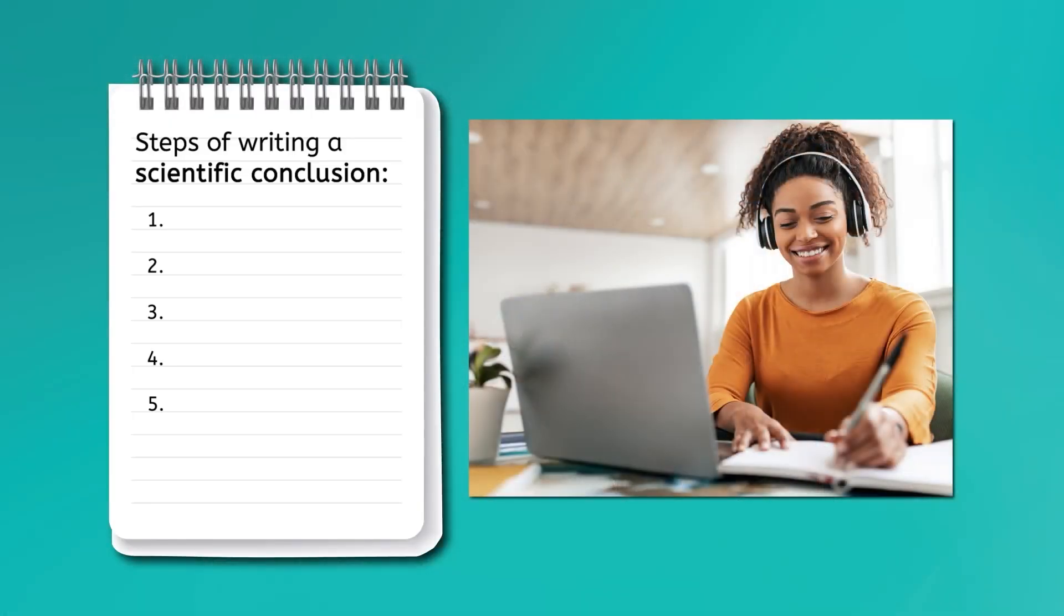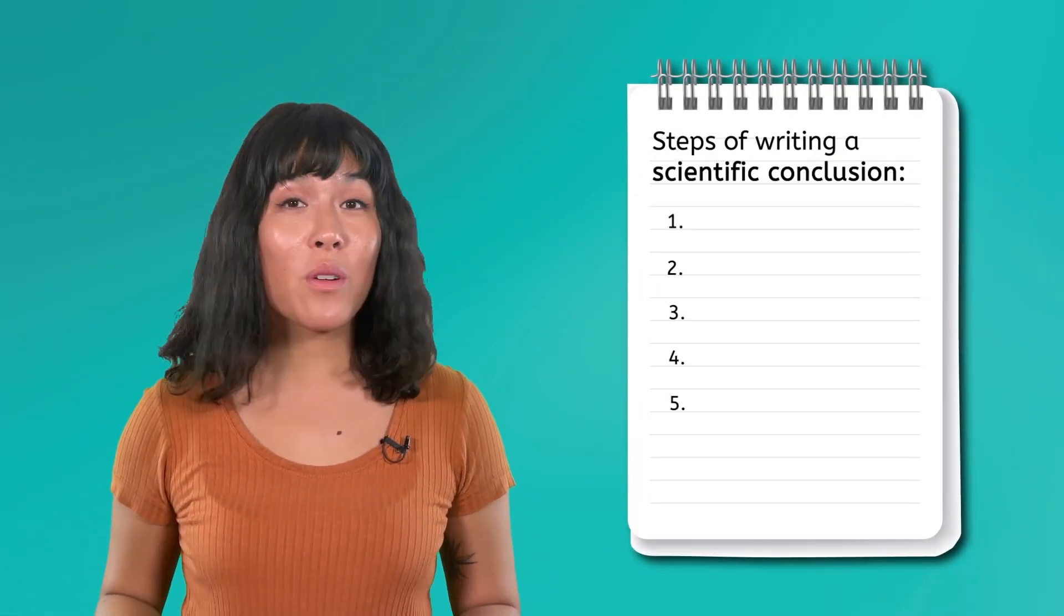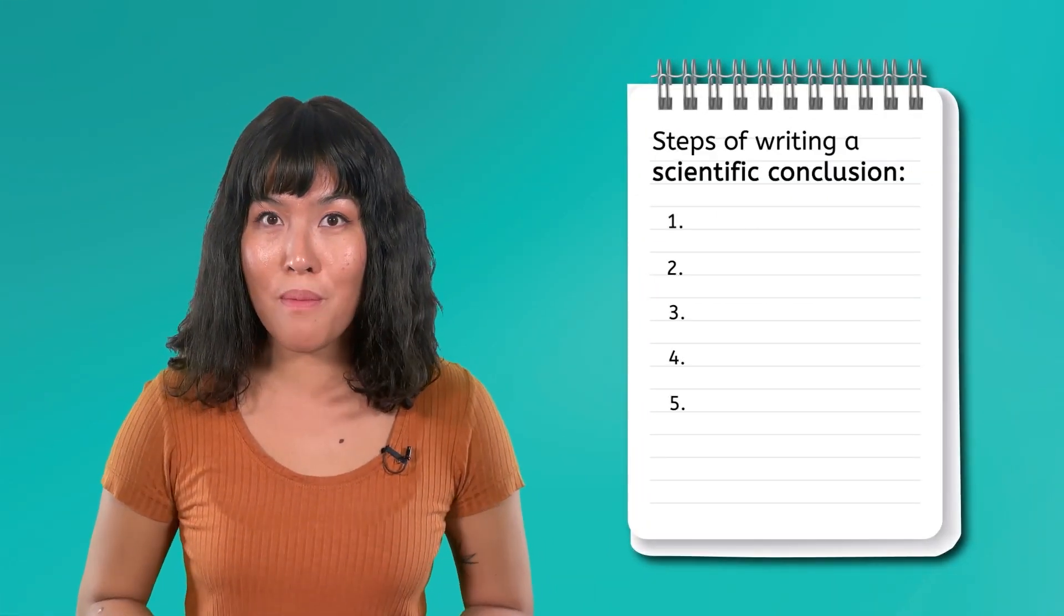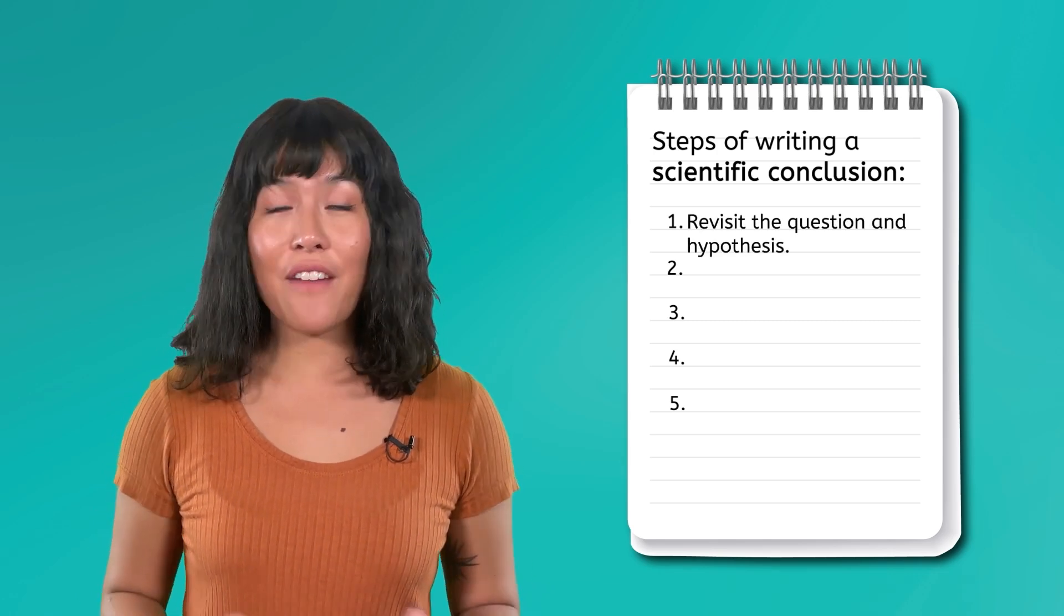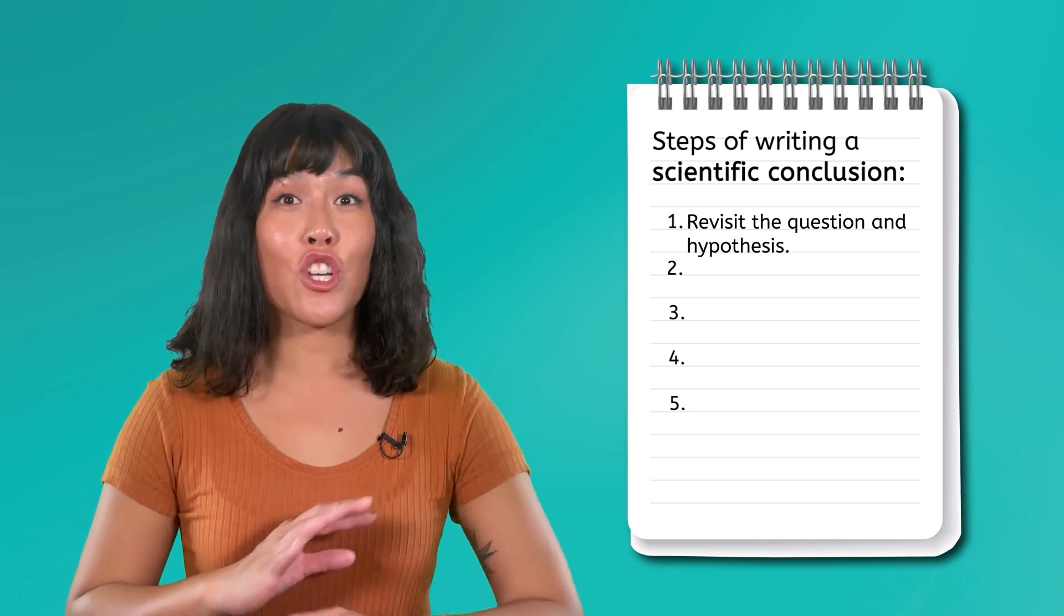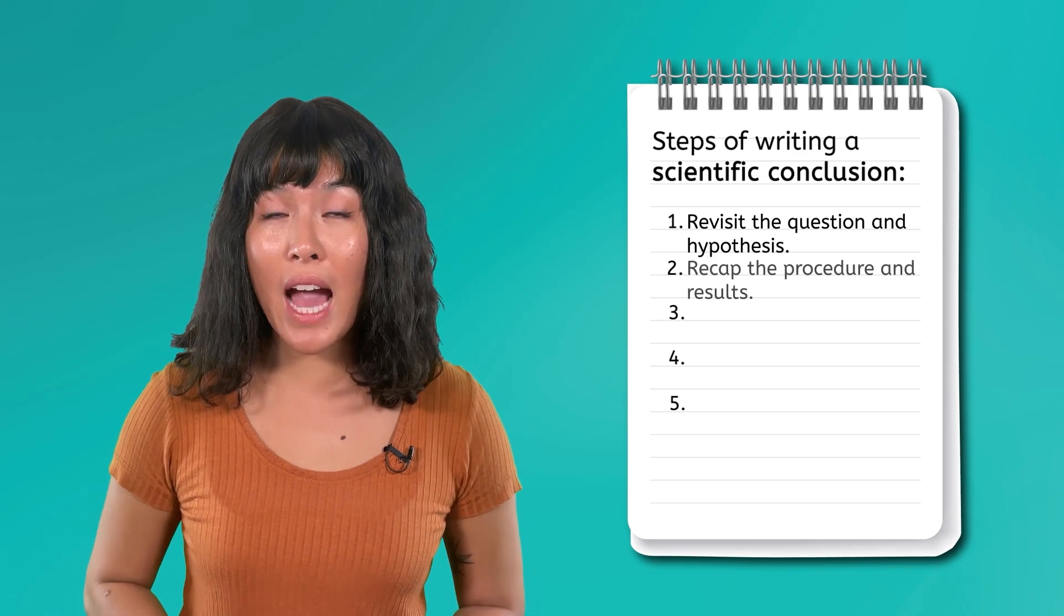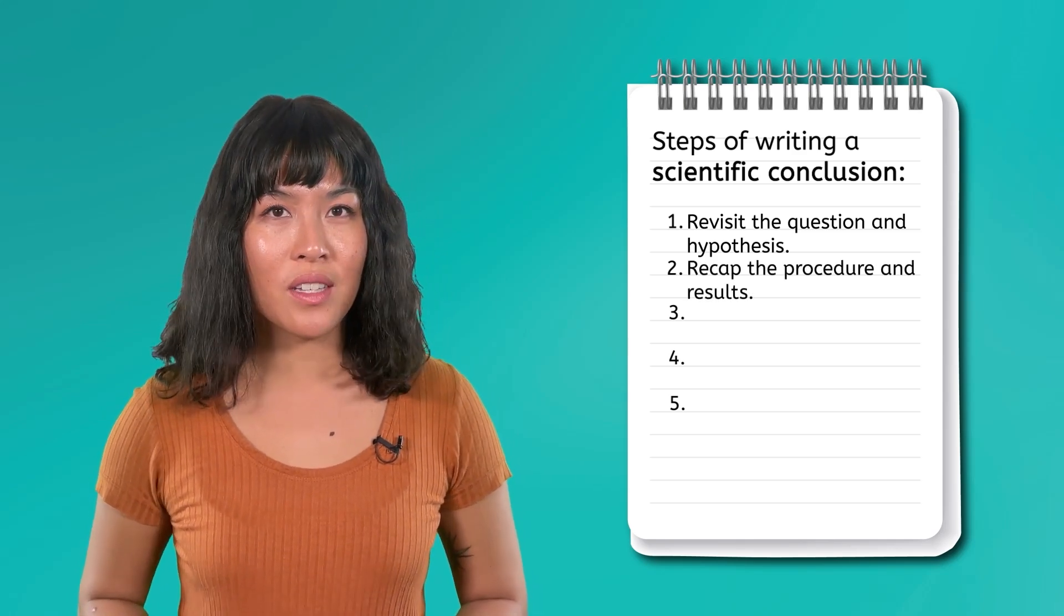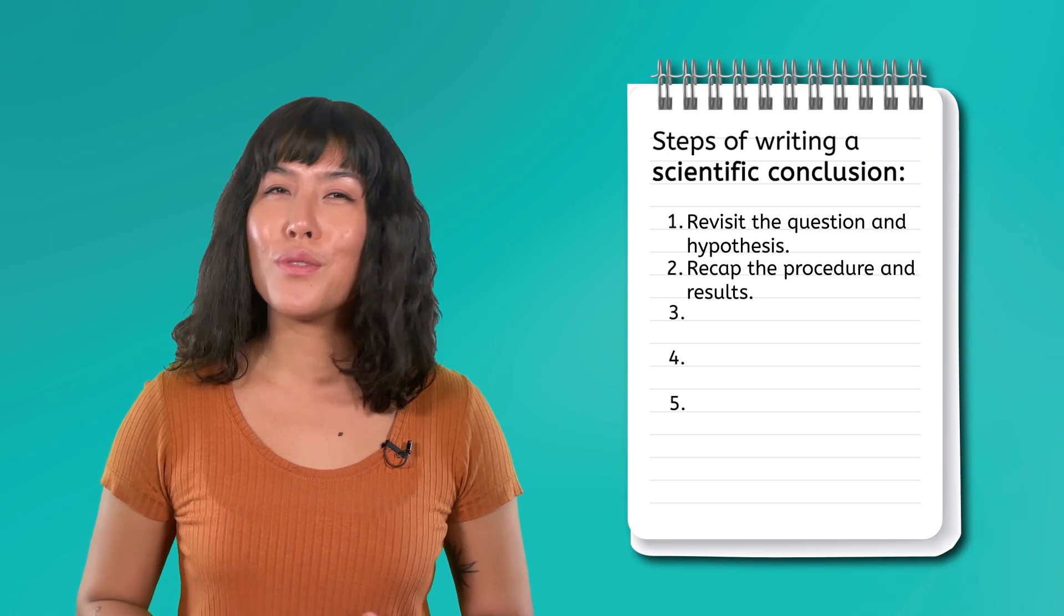Let's go through the steps of writing a scientific conclusion so that you will be able to write one after your own experiment. The steps of a conclusion are very similar to the steps of the experiment itself. We start by revisiting our question and hypothesis. After all, we want to write the conclusion as if it will be read by someone who has no idea what we did or why. Next, we briefly recap our procedure and results. And I do mean briefly. A sentence or two for each will do the job here.